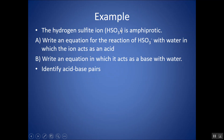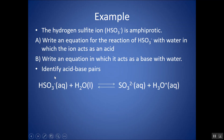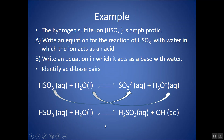HSO3- is amphiprotic — it can act as an acid or base depending on what it's reacting with. Acting as an acid with water: HSO3- donates H+ and turns into SO3 2-, while water acts as the base, accepting H+ and turning into H3O+. That gives one conjugate acid-base pair (HSO3-/SO3 2-) and another (H2O/H3O+). Acting as a base with water: HSO3- accepts H+ and turns into H2SO3, while water acts as the acid and turns into OH-. Those are the two conjugate acid-base pairs.